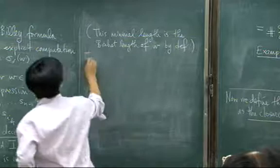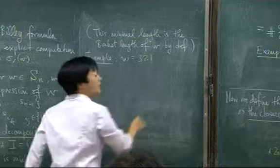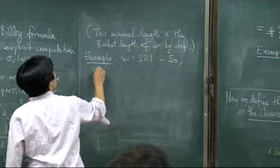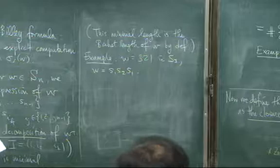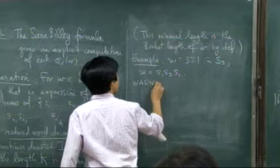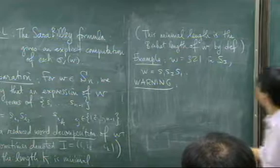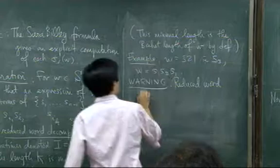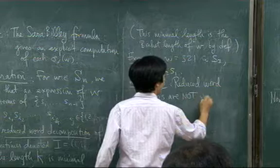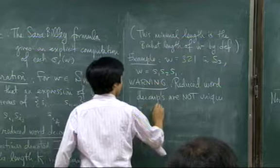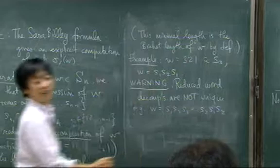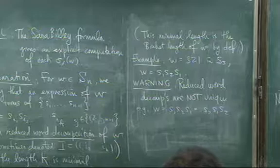For W equals 321 in one-line notation in S3, one possible reduced word decomposition is S1, S2, S1. Now, here's a warning right away. Reduced word decompositions are very much not unique. Not even close. For example, here's another one. So, you can work out that these are actually equal. You should just work out what the permutations are. But, you can still work with these decompositions.